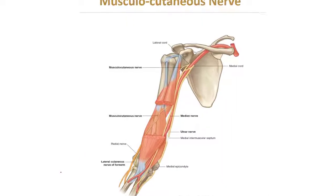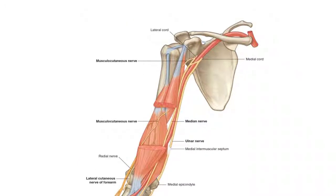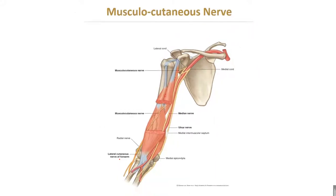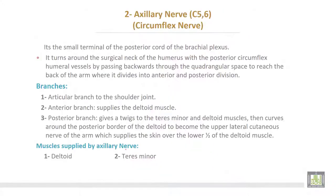The musculocutaneous nerve arises from the lateral cord of the brachial plexus, pierces the coracobrachialis muscle, passes between the biceps and brachialis, then becomes the lateral cutaneous nerve of the forearm.